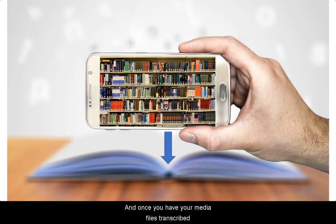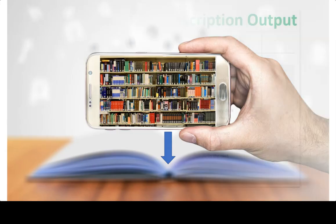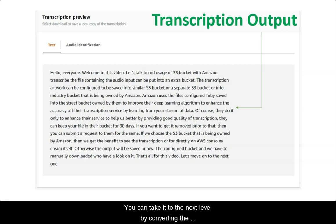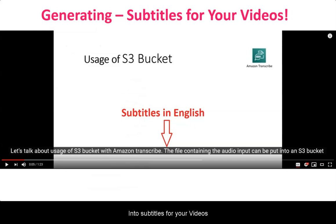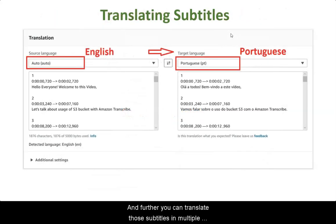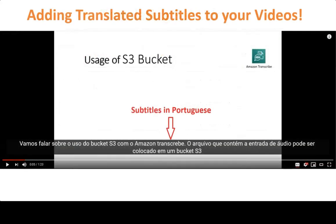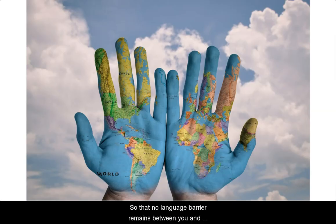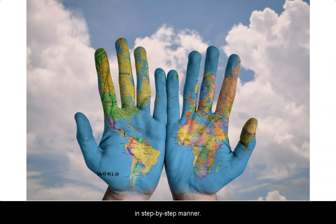And once you have your media files transcribed, you can take it to the next level by converting the transcription output into subtitles for your videos. Further, you can translate those subtitles into multiple languages using another service available within the AWS ecosystem, and add those translated subtitles to your videos, so that no language barrier remains between you and your audience. I will show you all of this in a step-by-step manner.